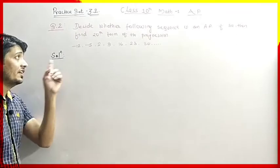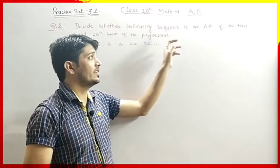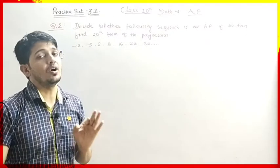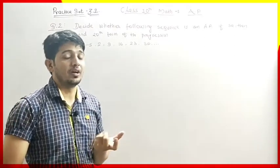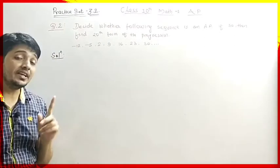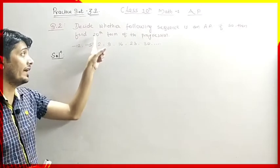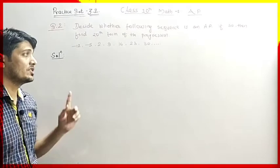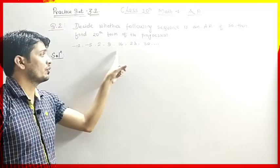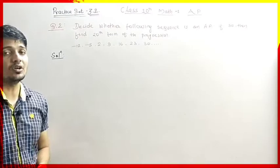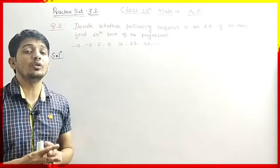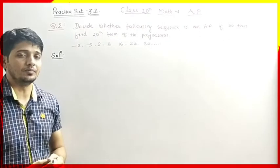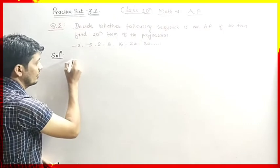The second question asks us to decide whether the following sequence is in AP. We have to find whether the given sequence is in Arithmetic Progression or not. If it is, then we have to find the 20th term of the given progression. For that, we have to find the common difference between every two consecutive terms.